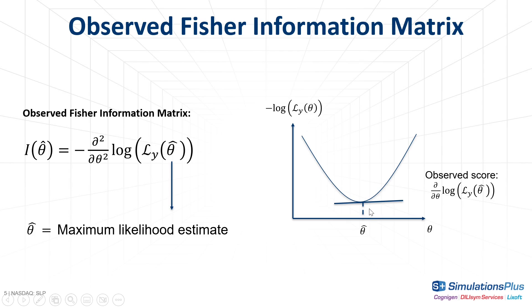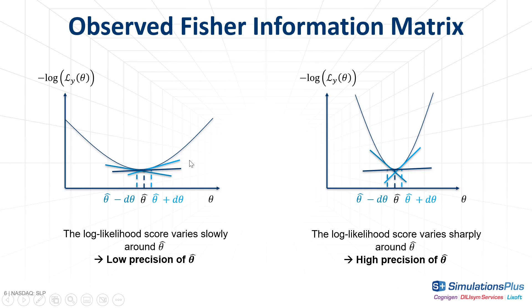It may also be seen as the curvature of the support curve, which is the graph of the log likelihood with respect to the population parameter values theta, at the location of the maximum likelihood estimate. This figure shows an example for a simple shape of support curve in one dimension, but remember that this support curve is multidimensional if there are several population parameters in the model. The slope of the support curve is called the score, and at the location of the maximum likelihood estimate, it is close to zero.